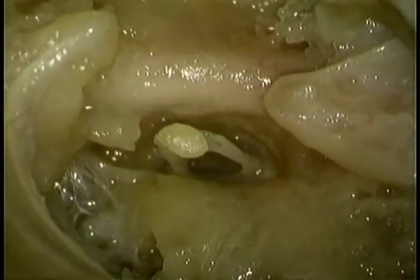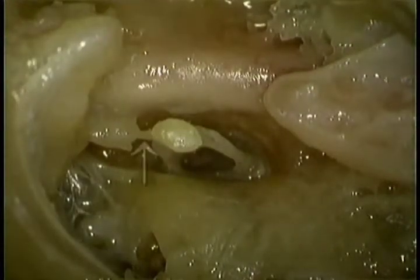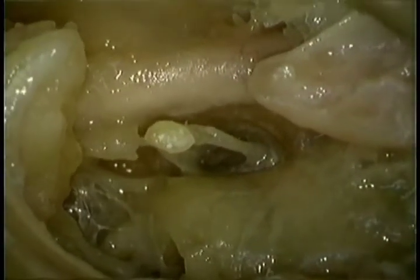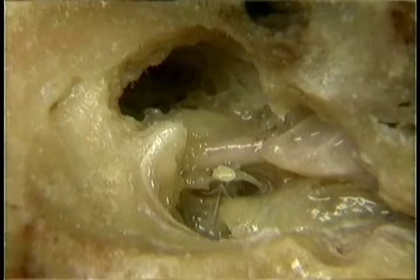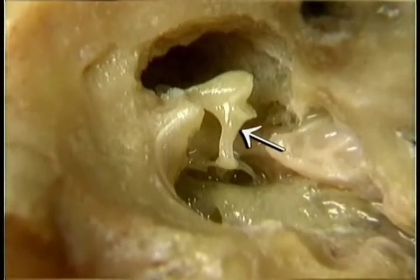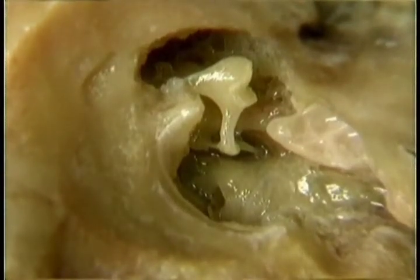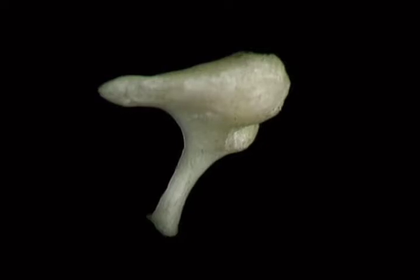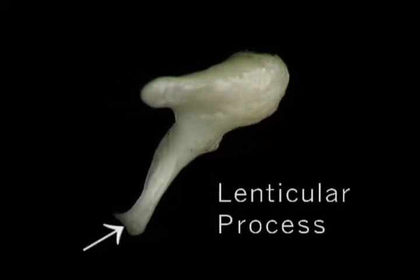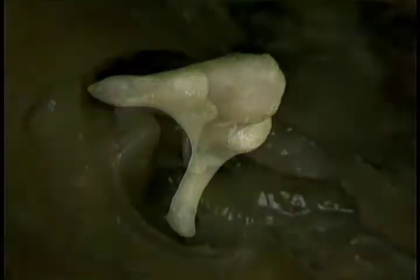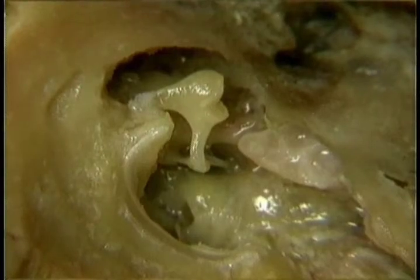The tendon of the tiny stapedius muscle is attached to the head of the stapes from behind. Here's the tendon of stapedius; its muscle belly is enclosed in bone back here. The stapedius muscle tilts the stapes backwards. The head of the stapes articulates with the incus. The incus has a body, a short crus and a long crus. The long crus curves medially, ending at the lenticular process, which articulates with the stapes. The short crus points backwards, and its tip is tethered to the wall of the tympanic cavity by the posterior ligament of the incus.